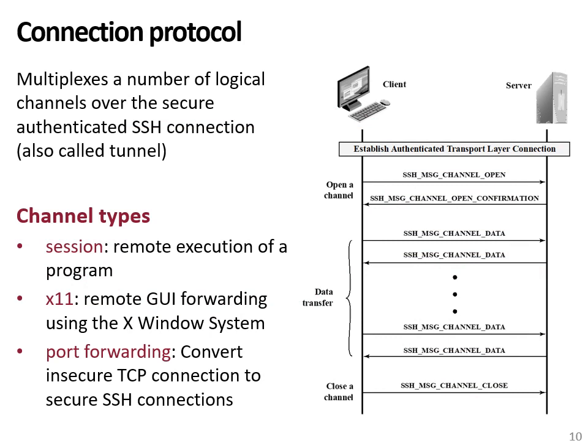The third and final protocol is the SSH connection protocol, which allows the client and server to open logical channels over a single secure authenticated SSH connection. The client and server can first negotiate and set up an SSH connection — also called a tunnel — and then open multiple logical sessions that use this connection for secure communication.